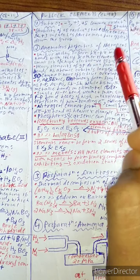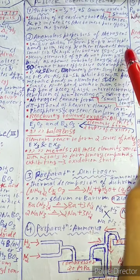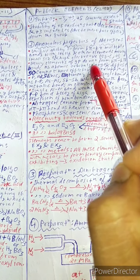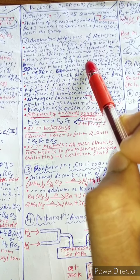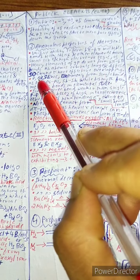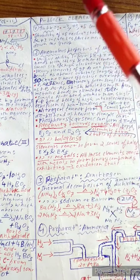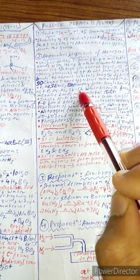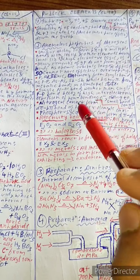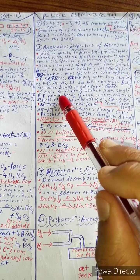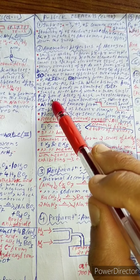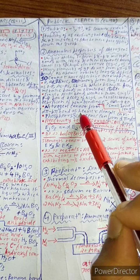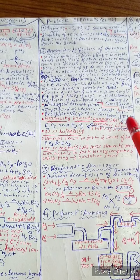Anomalous properties of nitrogen: nitrogen has a unique ability to form pπ–pπ multiple bonds with itself and other elements due to its small size and high electronegativity — for example, with carbon and oxygen. Heavy elements of the group do not form pπ–pπ bonds as atomic orbitals are large and diffuse, preventing effective overlap. Phosphorus, arsenic, antimony form single bonds while bismuth forms metallic bonds. Nitrogen cannot form dπ–pπ bonds, whereas heavier elements like phosphorus and arsenic can form dπ–dπ bonds.